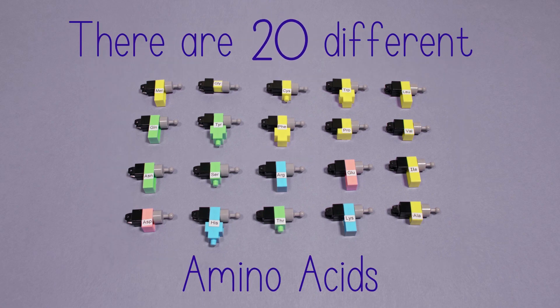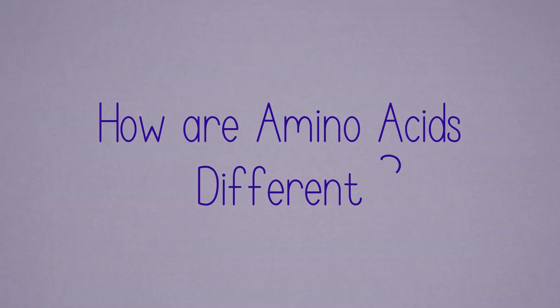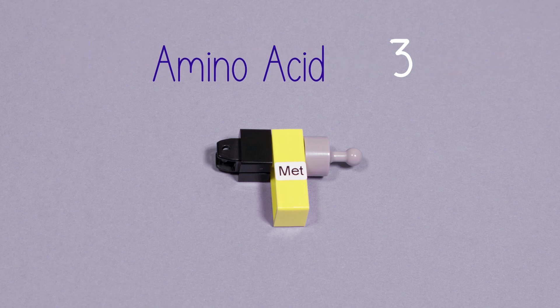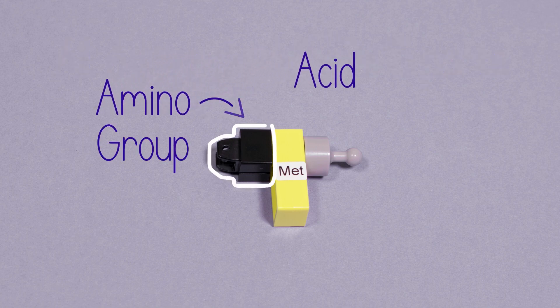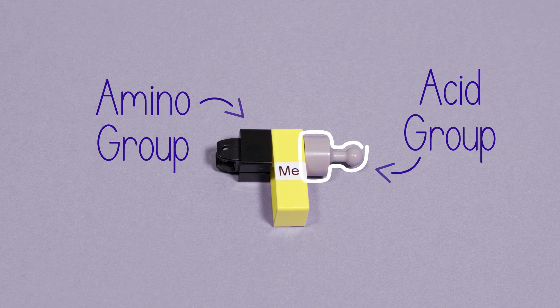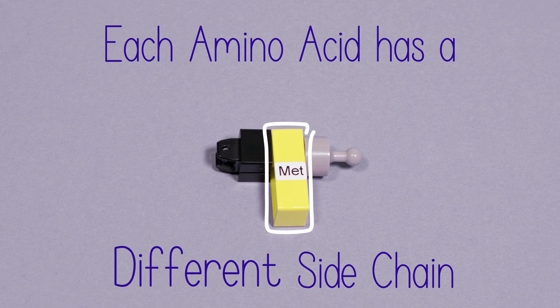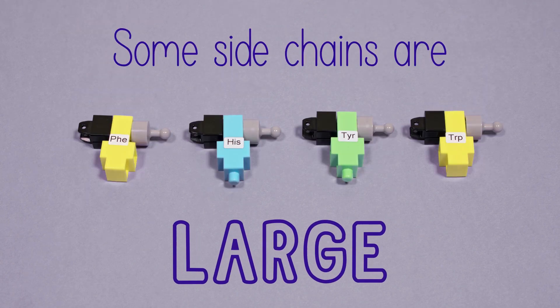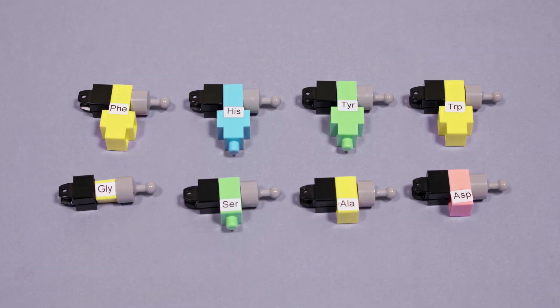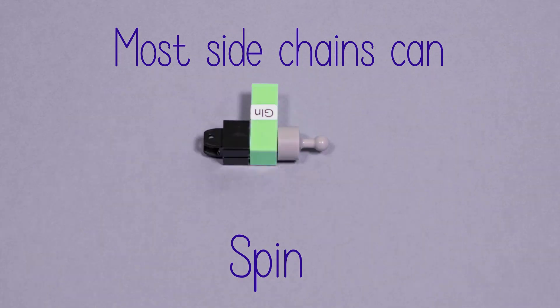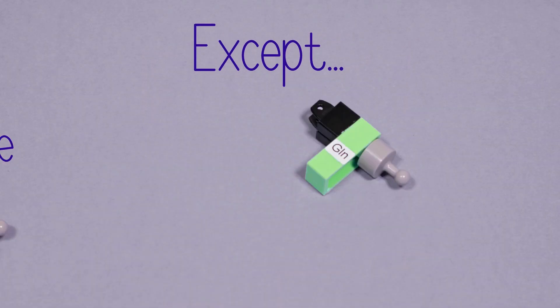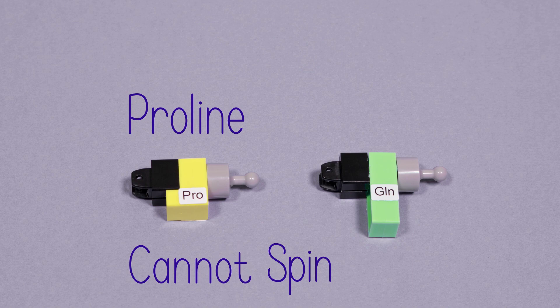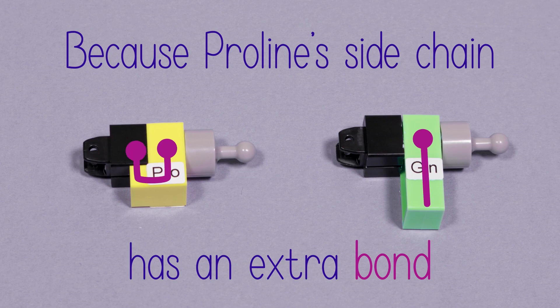There are 20 different amino acids. How are amino acids different? All amino acids have three parts: the amino group, the acid group, and the side chain. Each amino acid has a different side chain. Some side chains are large, other side chains are small. Most side chains can spin, except proline cannot spin, because proline's side chain has an extra bond.